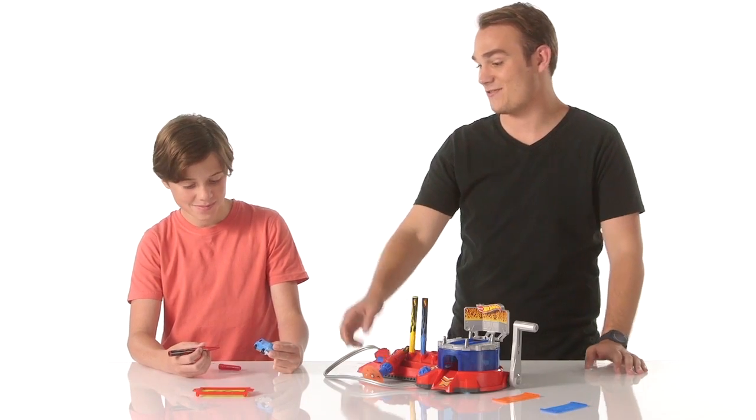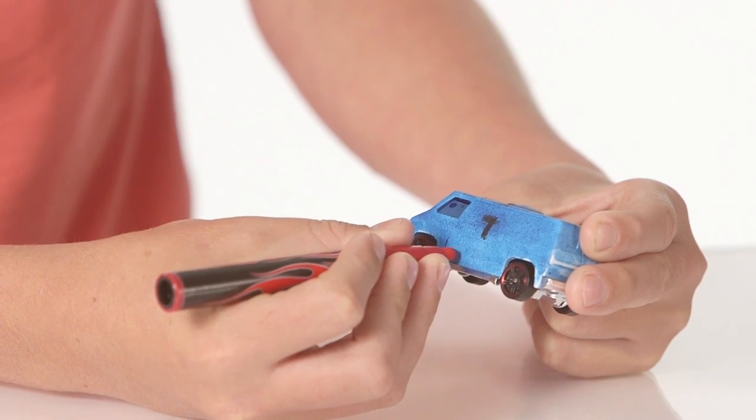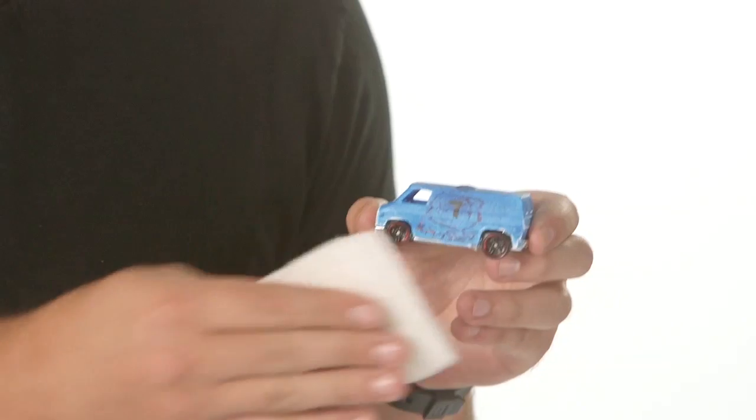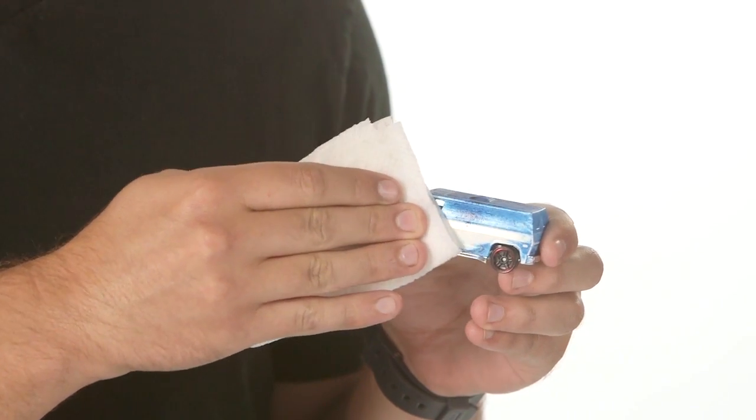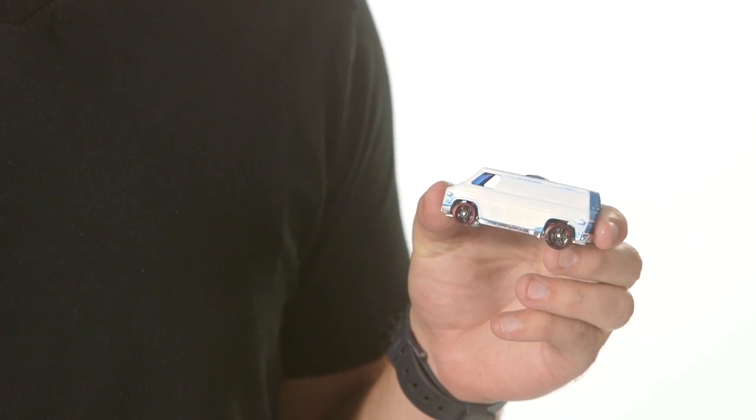Time for an autograph. You can write right on that car. The best part is these cars easily wipe off with a damp cloth, so the customization can happen over and over again. You should also use a damp cloth to clean the stencils and nozzles between every use.